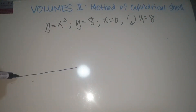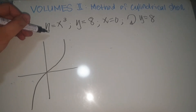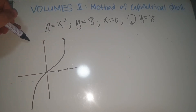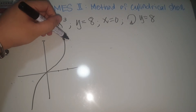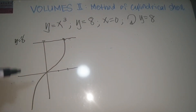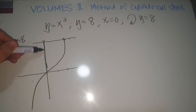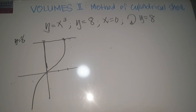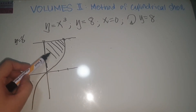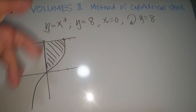Let's draw this first. y = x³ looks like this curve, and where y = 8, x would be equal to 2. So y = 8 is this horizontal line, and x = 0 is the y-axis. The shaded region is between the curve and these boundaries, and we are rotating it about the axis y = 8.